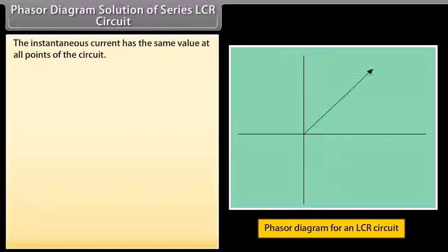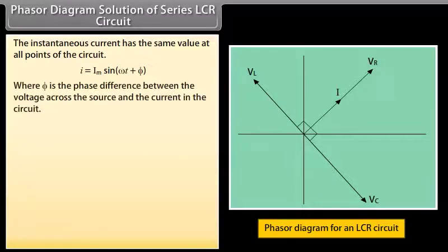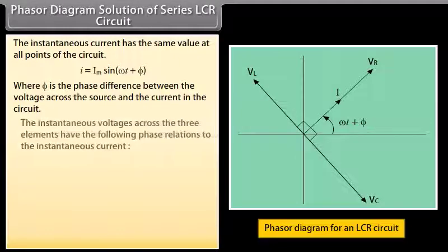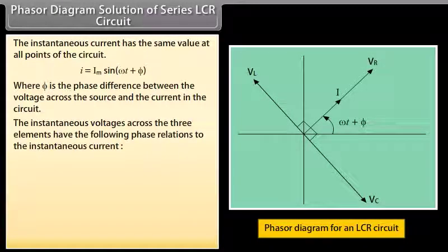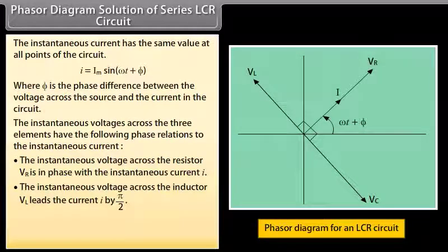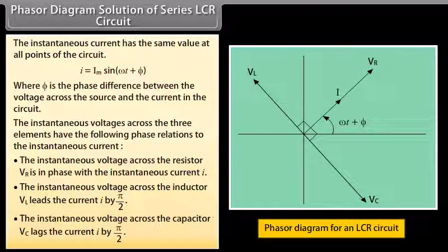Phasor diagram solution of series LCR circuit: The instantaneous current is the same at all points, I = Im sin(ωt + φ), where φ is the phase difference between the source voltage and circuit current. The voltage across the resistor VR is in phase with current I. The voltage across the inductor VL leads the current by π/2. The voltage across the capacitor VC lags the current by π/2.